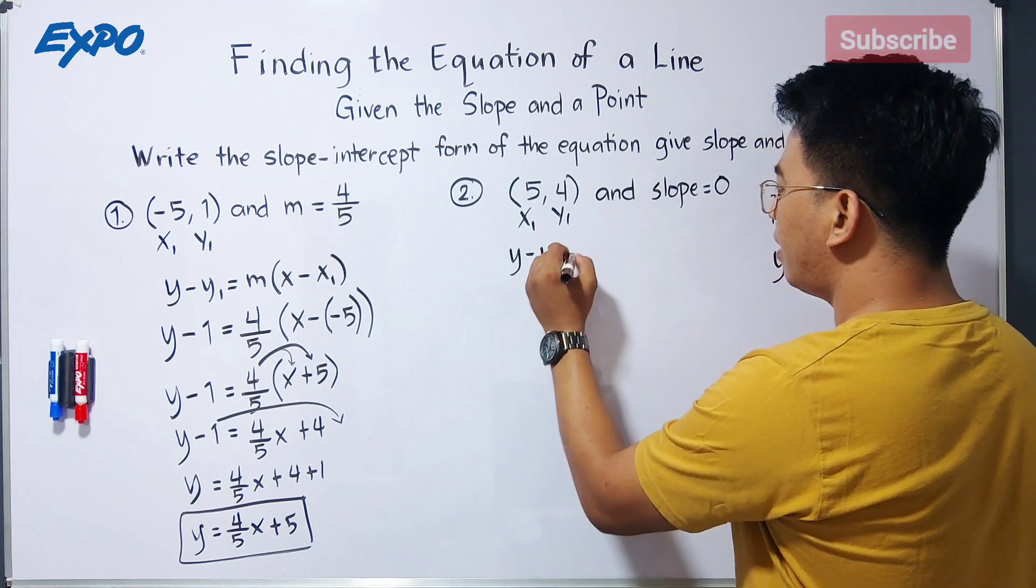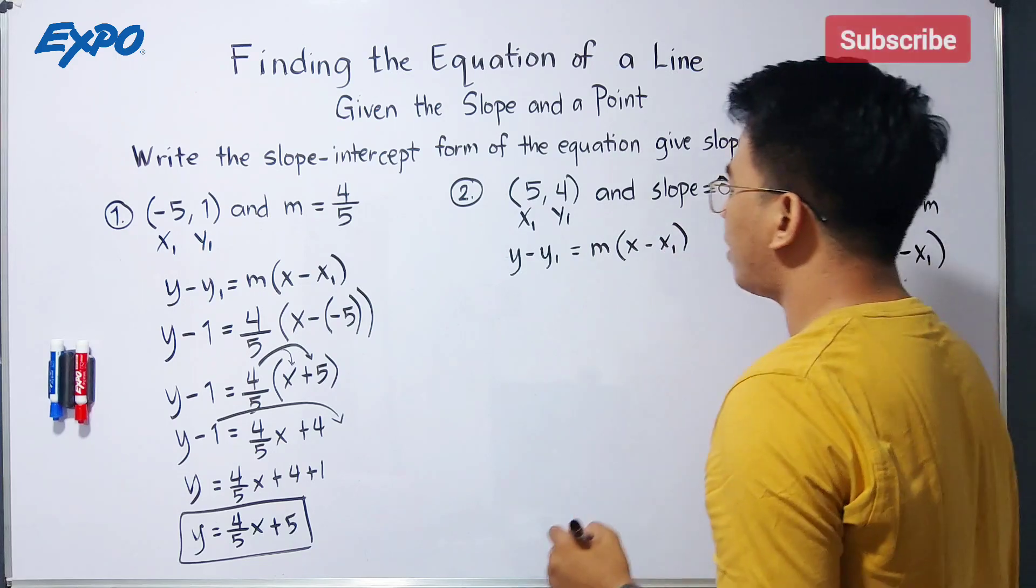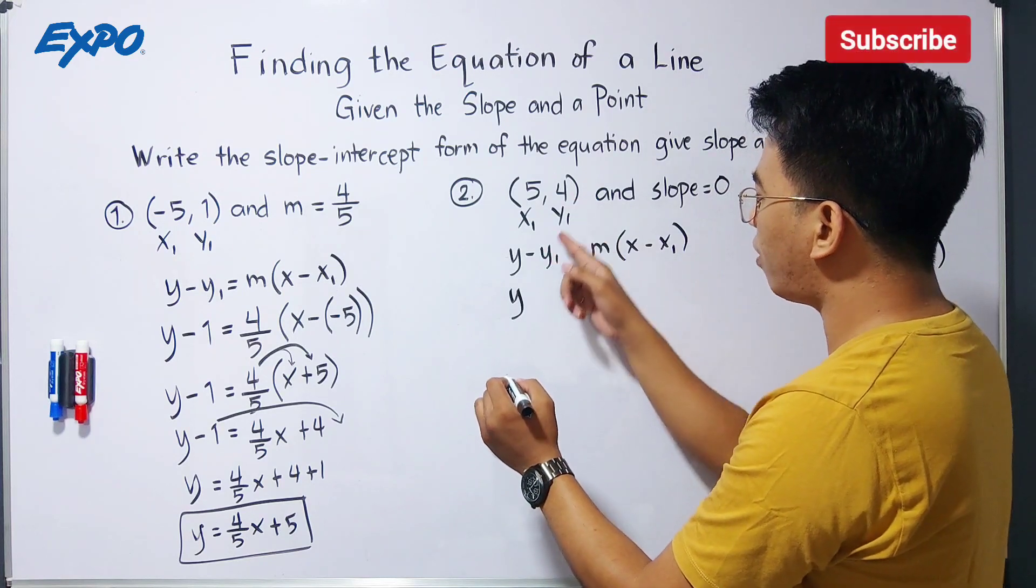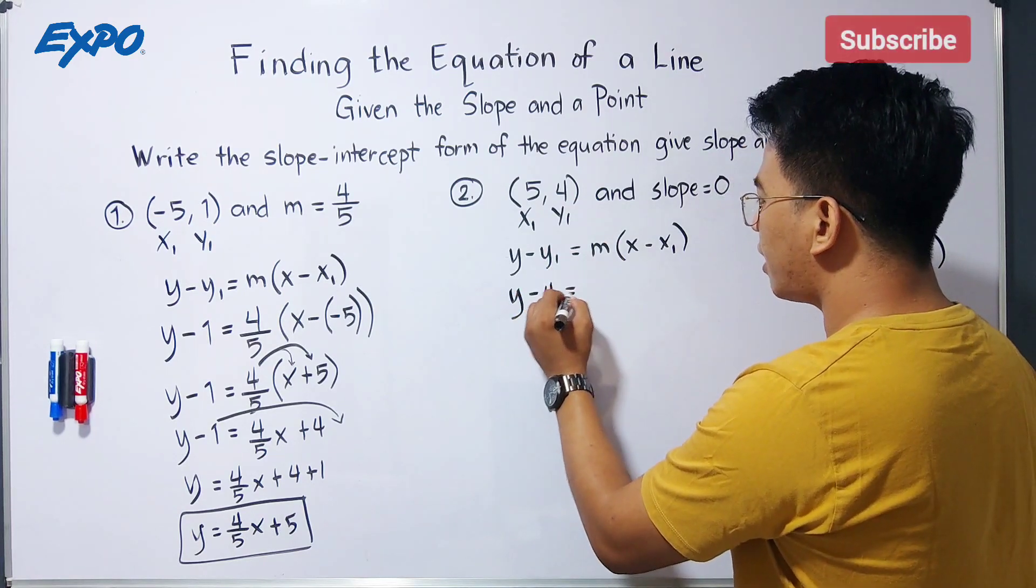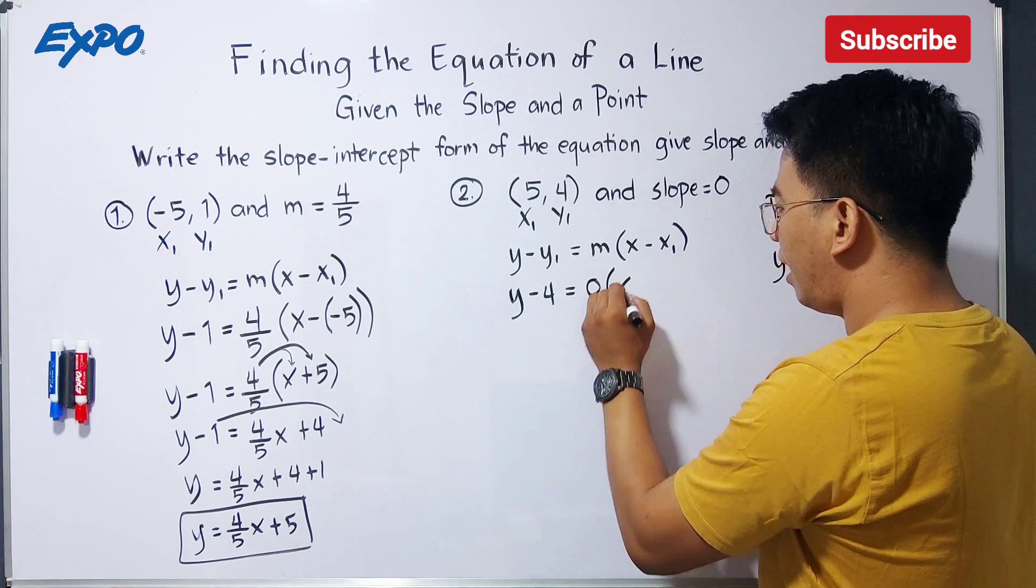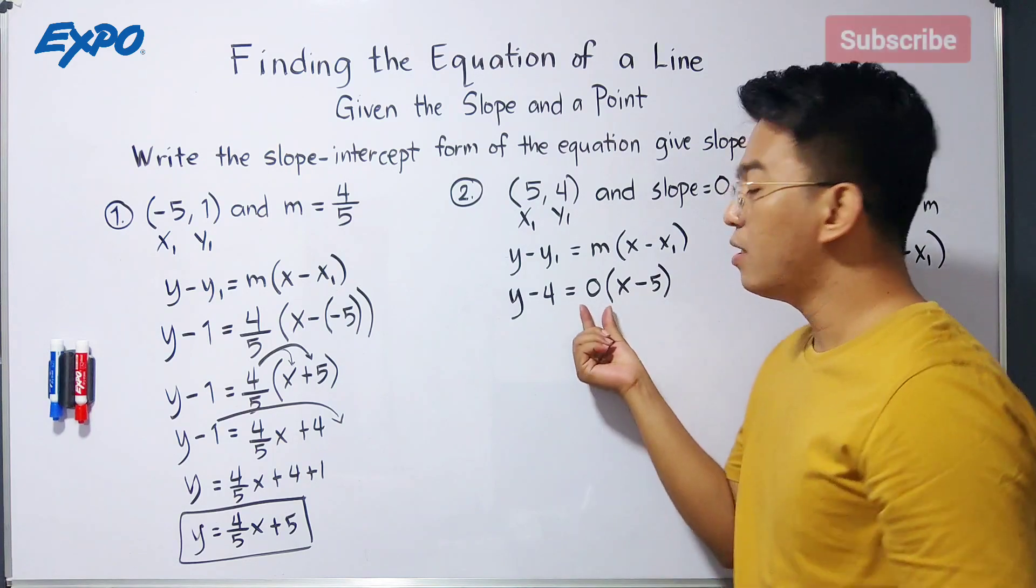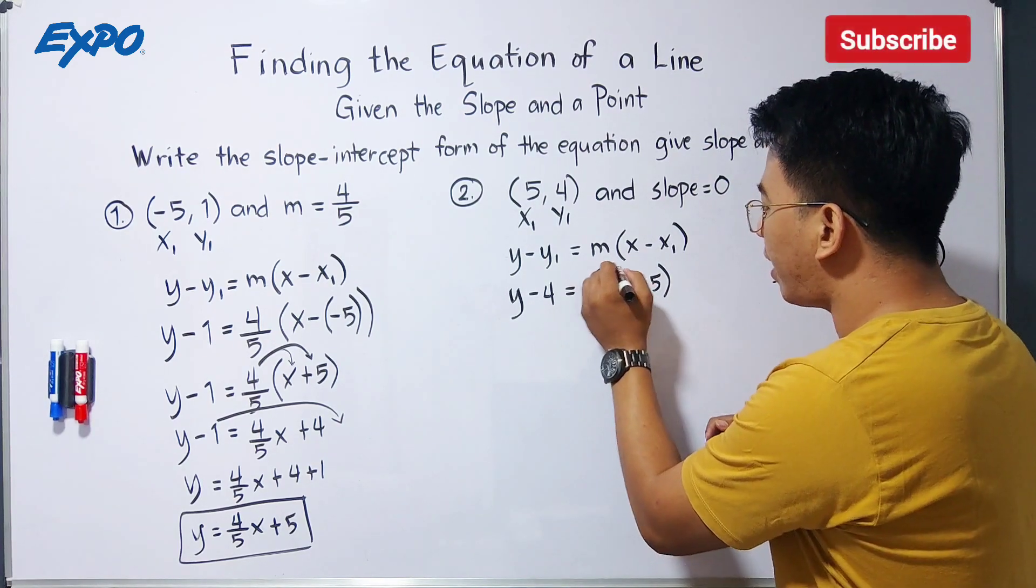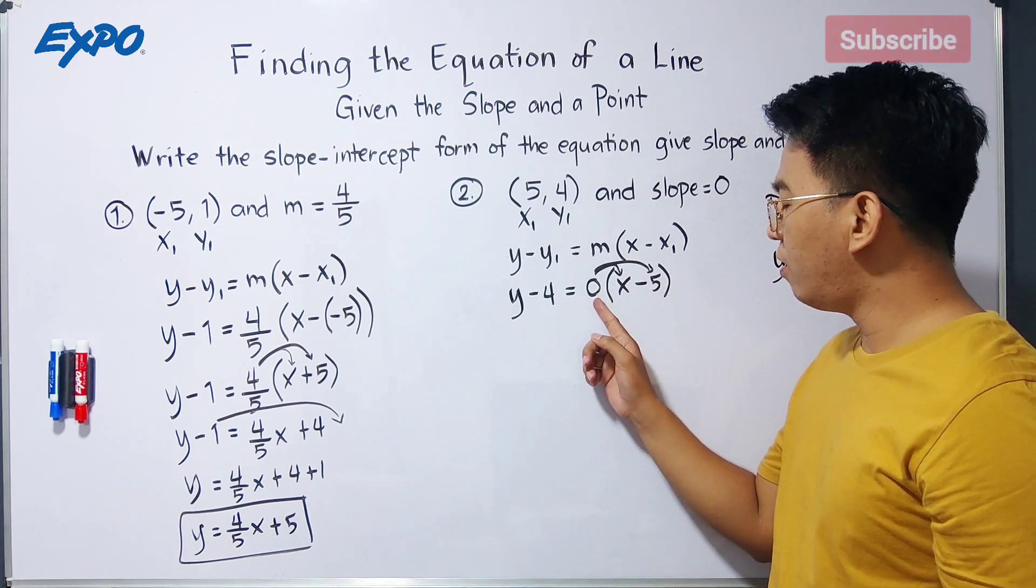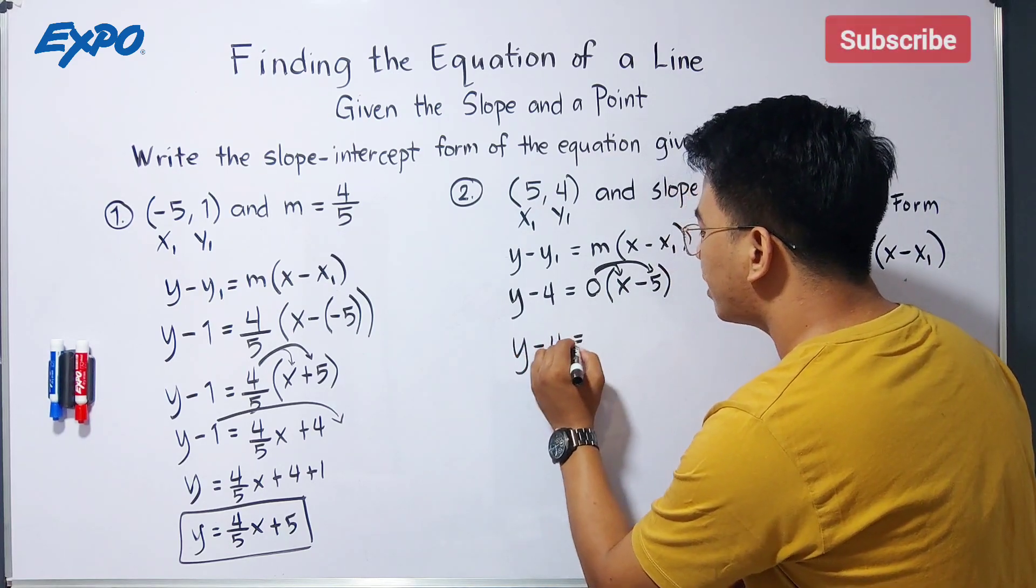Use this formula. y minus y sub 1 is equal to m times x minus x sub 1. So what we have here is y. Your y sub 1 is 4, so this is minus 4, is equal to your m, which is the slope, which is equal to 0, times x minus your x sub 1, which is equal to 5. So as you can see, since the slope is 0, and then we will try to multiply this by 0, 0 times x is 0, and 0 times negative 5 is 0. So what we have here is y minus 4 is equal to 0.